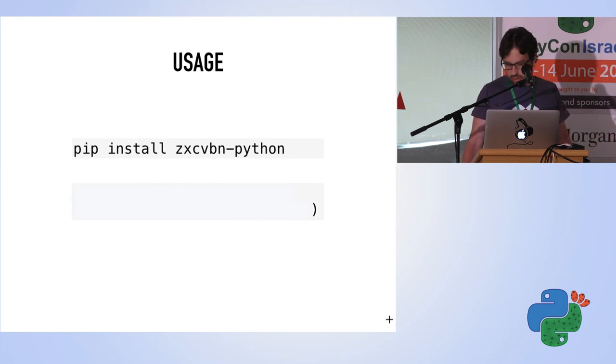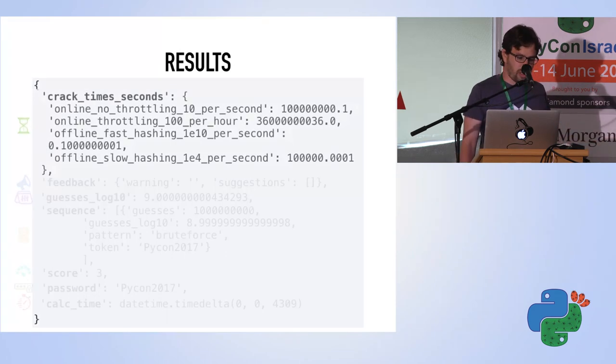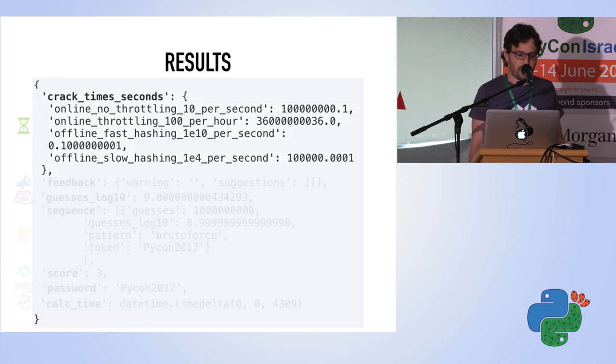So how does the result look like? As you can see here, you have all details. The first part is the crack time seconds in different rates. We only talked about one rate—1,000 guesses per second—but you can talk about online rates, online with throttling and without throttling. We have the calculation in different rates.